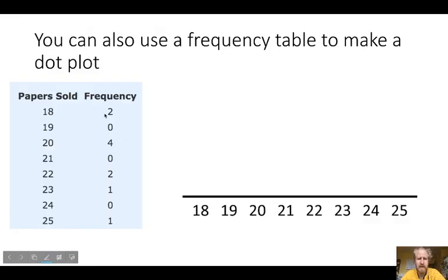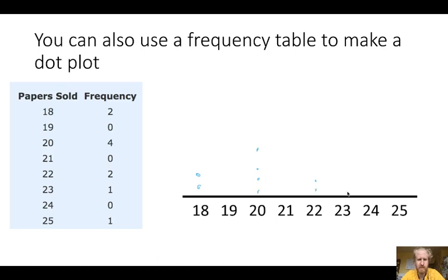If I already have a frequency table, I can just put dots where I see them — nineteen has zero, so nothing there. It's just a helpful way of seeing our data, just one other way.